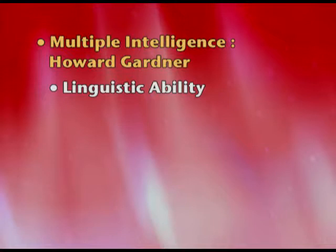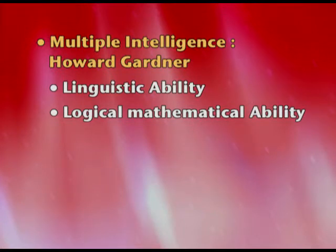Let's look at the components. Linguistic ability is language-based and communication-based, so poets, writers, public speakers, and debaters will definitely have very good linguistic ability. Logico-mathematical ability deals with maths, numbers, logic, and scientific reasoning — Nobel Prize winners, mathematicians, and scientists are examples of people with strong logico-mathematical ability.